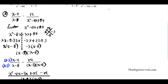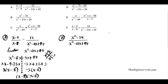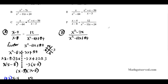For option B, we have x squared minus 7x divided by x squared minus 11x plus 24. We already factored x squared minus 11x plus 24 as (x minus 3)(x minus 8). So option B equals x squared minus 7x over (x minus 3)(x minus 8), which is the same result as option A.